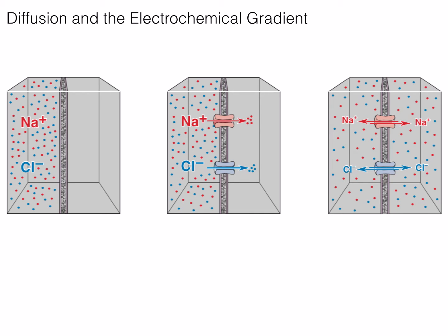The rules of simple diffusion tell us that ions in high concentration will move down their concentration gradient to an area of low concentration, until such a point as both areas are equal in concentration. It is important to note that ions will continuously move, but the overall net movement will cease. The same rules apply across the membrane of a neuron, in which ions will flow into or out of the neuron until equilibrium is achieved.